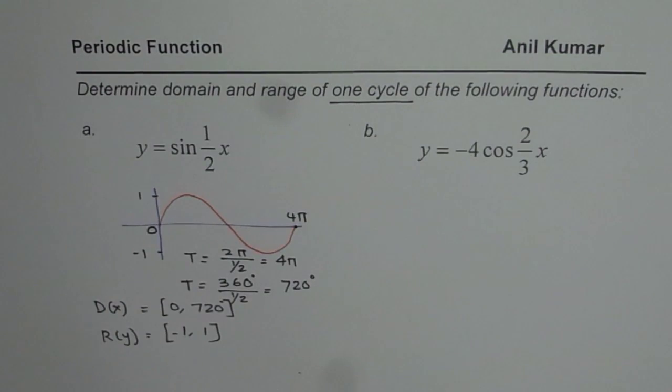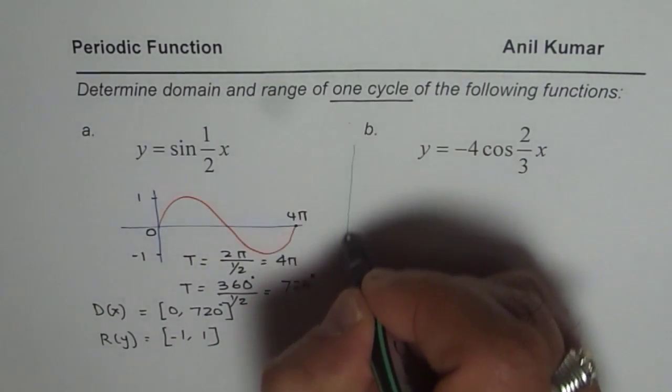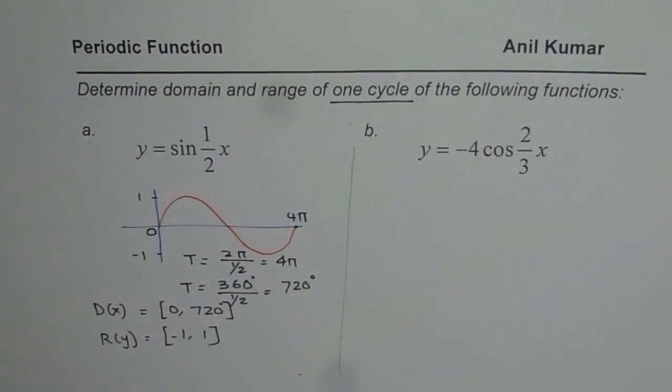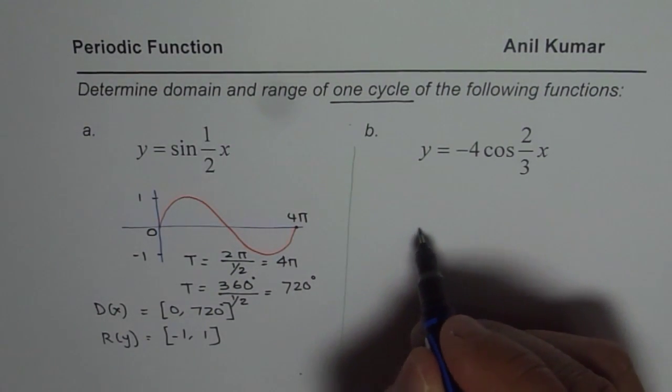That is how this question should be answered. The next question here is y equals minus 4 cos 2 over 3x. Now let us sketch this function also.